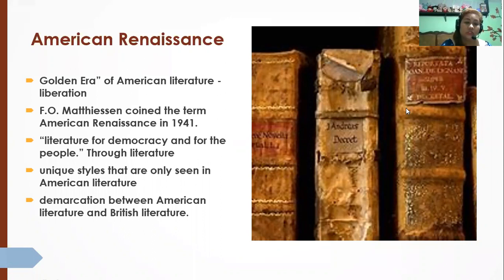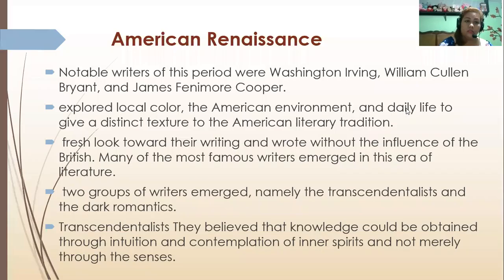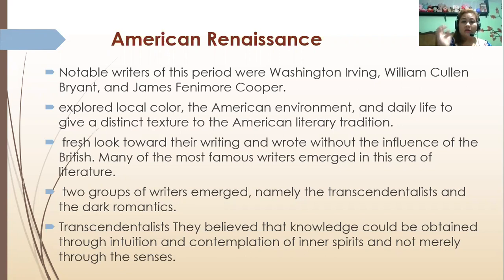Then came the American Renaissance, the golden era of American literary liberation and literature for democracy and the people. American literature had this unique style seen in writers like Washington Irving, William Cullen Bryant, and James Fenimore Cooper, which tackled local color, the environment of America, and the texture of daily life. Famous writers emerged in two groups: the Transcendentalists and the Dark Romantics.